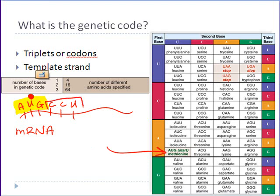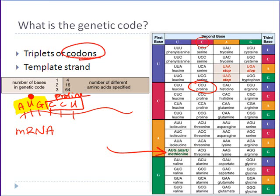Then if we go to the next set of three — C, C, U — and look on our chart, C, C, U codes for proline. So we'd bring in proline next. The reading of messenger RNA in sequences of triplets — those are called codons. Each triplet is called a codon, and each codon codes for a particular amino acid, as you can see from this table.